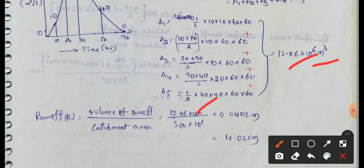Converting: 1 square kilometer equals 10 power 6 square meters. Meter cube cancels with one meter, giving 0.0402 meters runoff, or 4.02 centimeters.